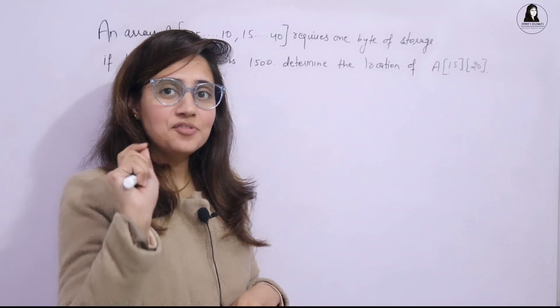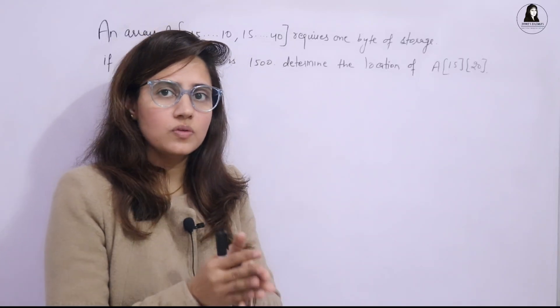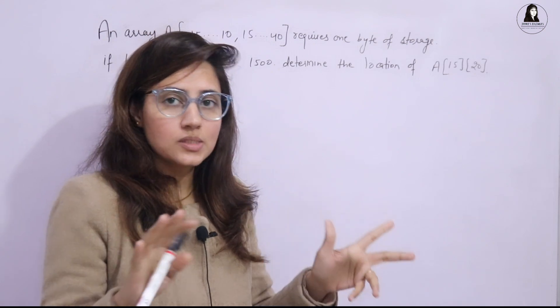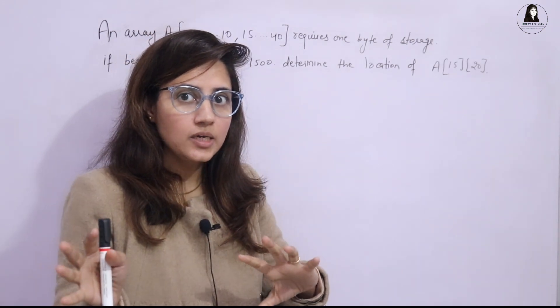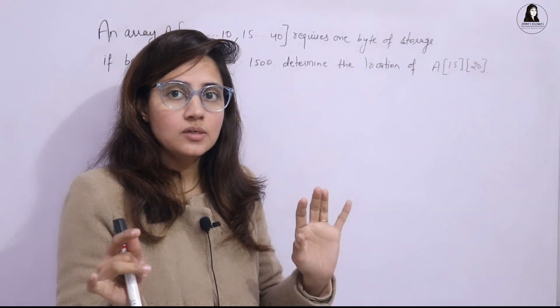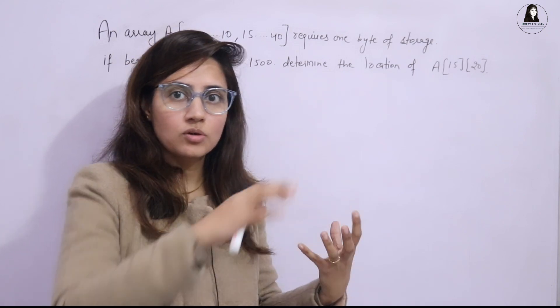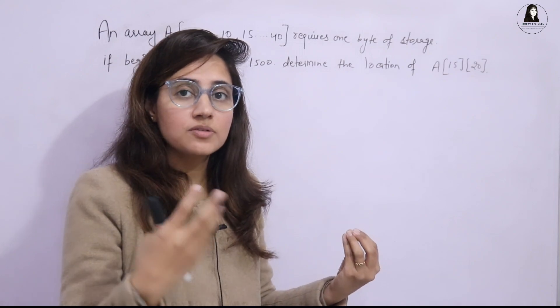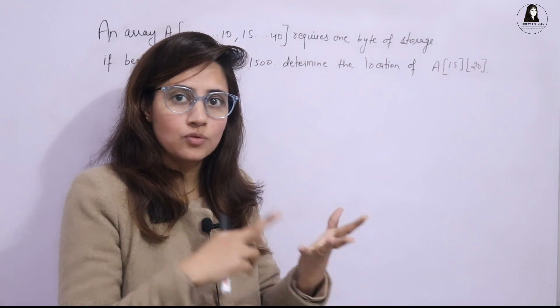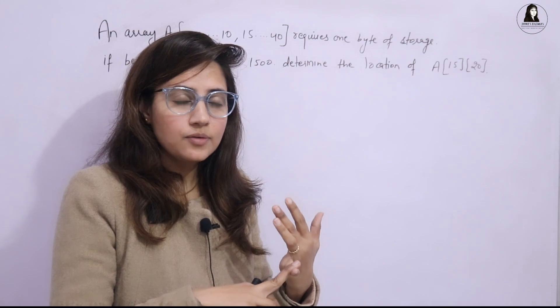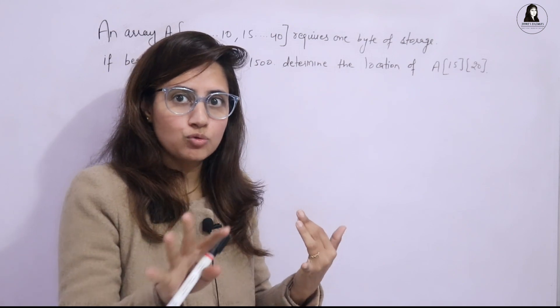Hey everyone! I hope you all are safe and doing good. In the series of learning C++ programming language, we are discussing 2D arrays. In the previous video we have seen the addressing in 2D array, how addressing is done for 2D array elements, how the address is calculated - two formulas for row major and column major. With one example also we have seen that.